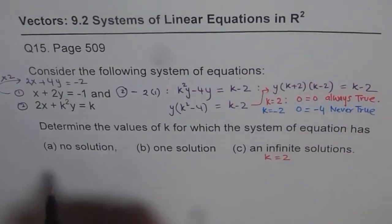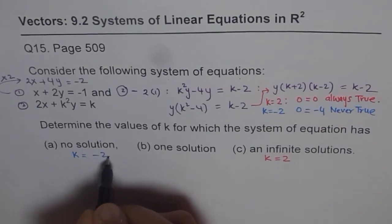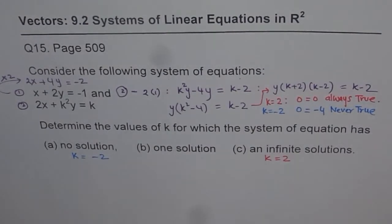So for k equals to minus 2, there is no solution. So k is minus 2, no solution. Do you understand that part?